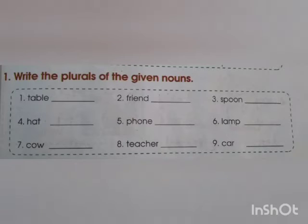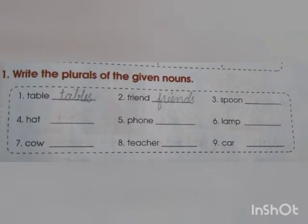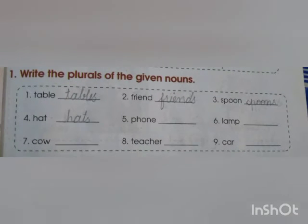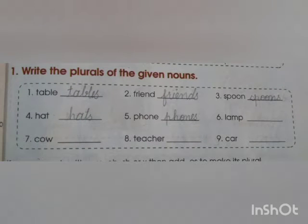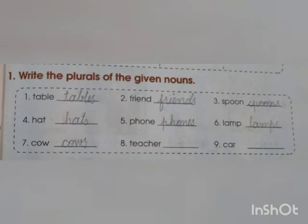Open the book at page number 19 and write the plurals of the given nouns. First word: table → tables. Second: friend → friends. Third: spoon → spoons. Fourth: hat → hats. Fifth: food → foods. Sixth: lamp → lamps.